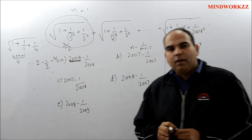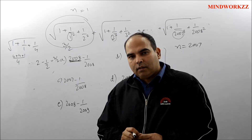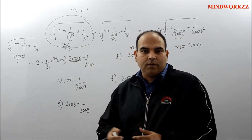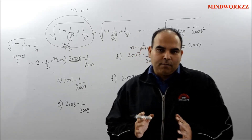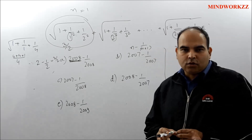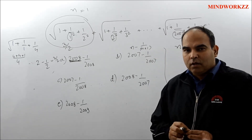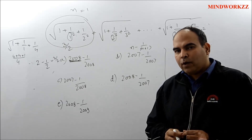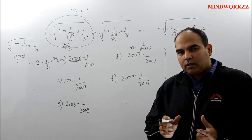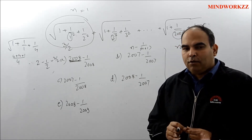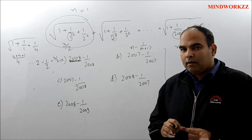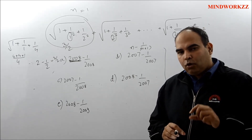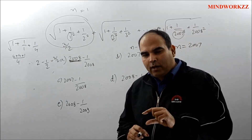Just because Option A gives 3/2 doesn't mean we jump to that answer, because there could be other options that also give 3/2. We have not used any mathematical logic here — we are solving by substituting values. Sometimes question setters trap you by giving a wrong option that produces the same numerical value, so you need to check all five options.